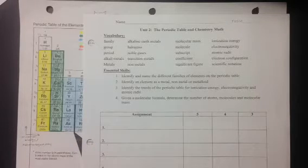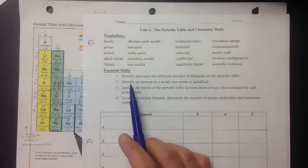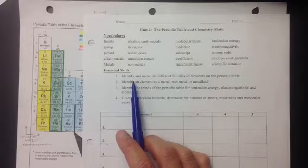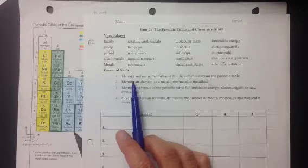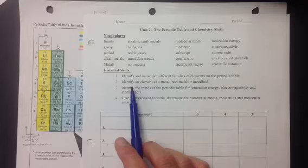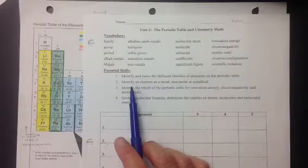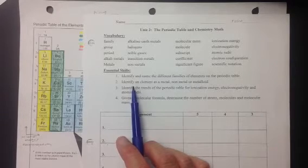So this video will talk about essential skill number one, identify and name the different families of elements on the periodic table, and essential skill number two, identify an element as a metal, non-metal, or metalloid.